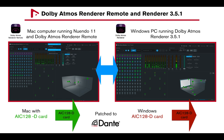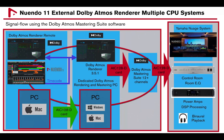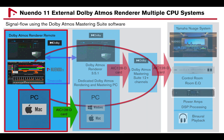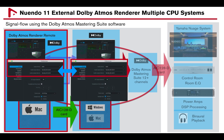Make sure to patch the Yamaha AIC 128D card of the Mac computer to the AIC 128D card in the rendering mastering workstation. Now let's take a look at the signal flow starting with the Mac computer running the Dolby Atmos Renderer Remote and new Windows 11. On the Dolby Atmos Renderer Remote, under Preferences, Driver, the Yamaha AIC 128D card should be selected under Audio Inputs and Output Device.